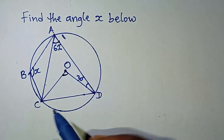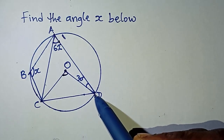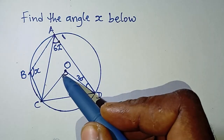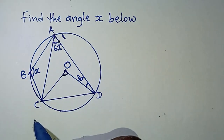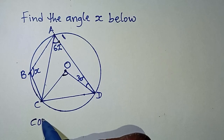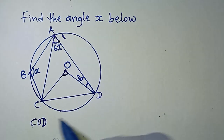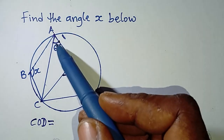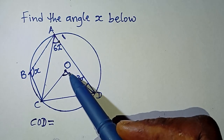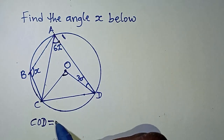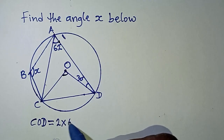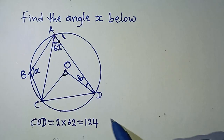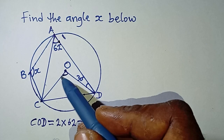So angle COD is equal to twice the angle at the circumference. Since the angle at the circumference is 62°, we have 2 multiplied by 62, which equals 124 degrees. So this angle here is 124°.